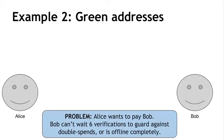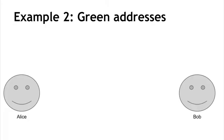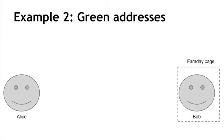Another cool application is what are called green addresses. The problem here is that Alice wants to pay Bob and Bob's offline, so Bob can't go and look at the blockchain to see if a transaction that Alice is sending is actually there. Maybe Bob simply doesn't have the time to wait for the transaction to be confirmed — normally we want a transaction to be confirmed by six blocks, which takes up to an hour. Or maybe Bob is in a Faraday cage and doesn't have any connection to the internet at all, such as if Bob is a person selling food on the street. To solve this problem, we have to introduce another third party, which is the bank.